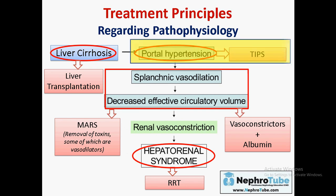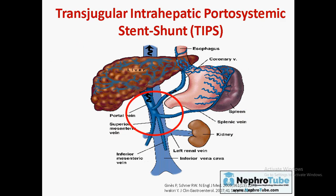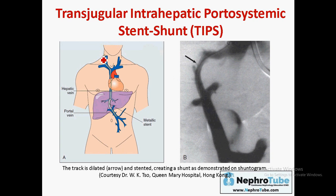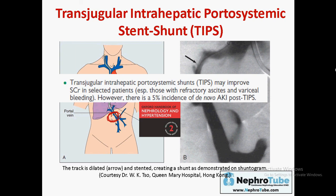Regarding TIPS — transjugular intrahepatic portosystemic stent shunt — the main idea is to decrease portal hypertension. This shunt is introduced through the jugular vein, through the hepatic veins to the portal vein, to bypass obstruction and decrease portal hypertension. However, 5% of patients who have TIPS will develop acute kidney injury, and a major complication is increased incidence of hepatic encephalopathy. So TIPS is not curative — it is supportive in some patients.